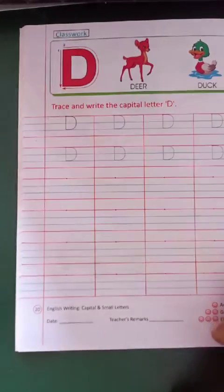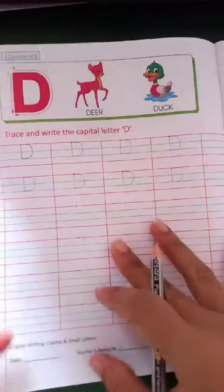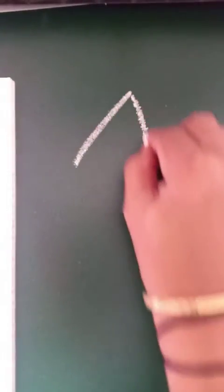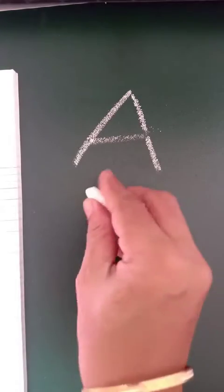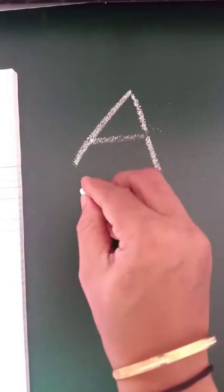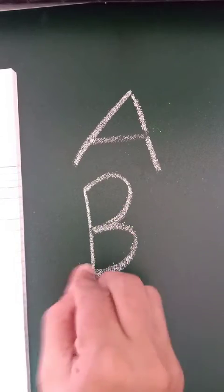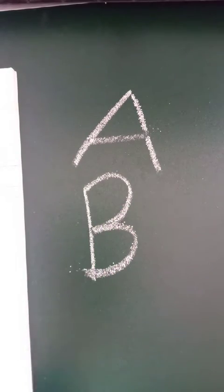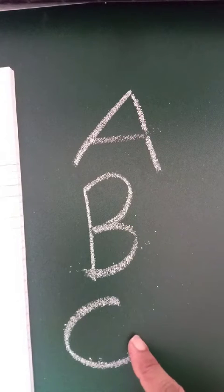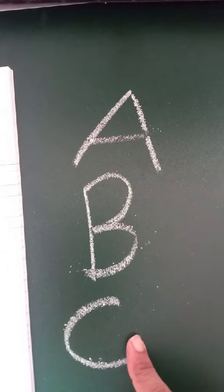Now, what we did in last lecture — hum logo ne A sikha, hai na? A kese banana sikha aap ne? Slant line, sleeping line — A. Right? A for apple, B for ball, C for cat. A, B, C — hum ne sikha, thik hai?